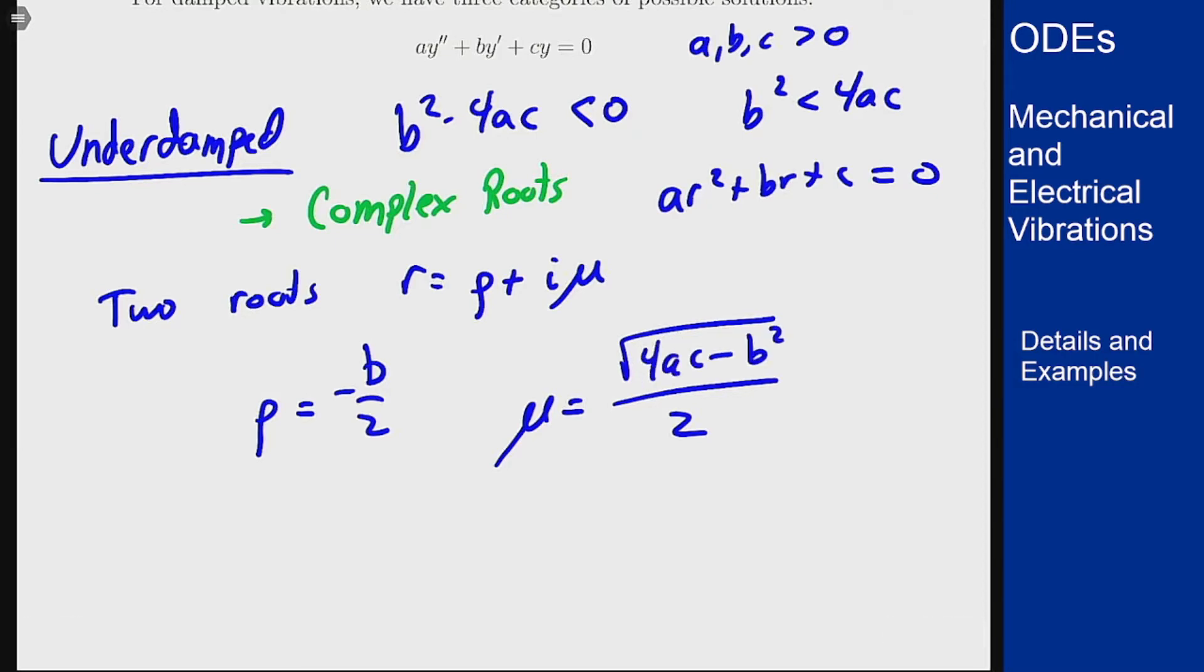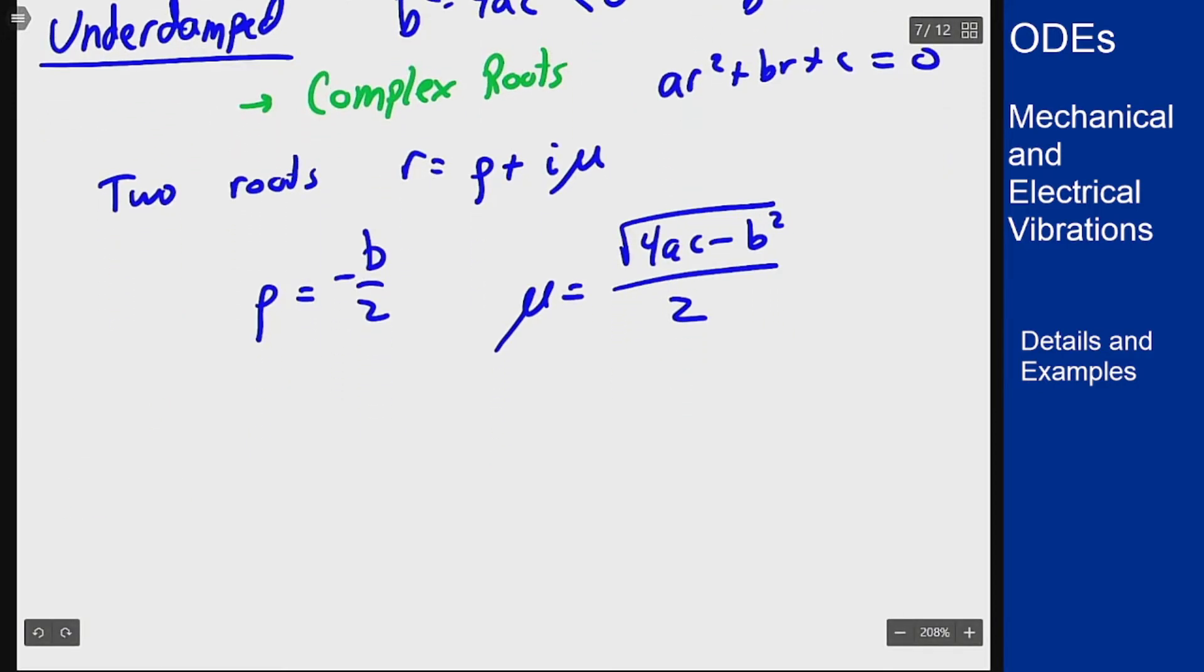I'll have my two roots that are of this form and with that I will get a general solution y(t) = c₁e^(ρt)cos(μt) + c₂e^(ρt)sin(μt).